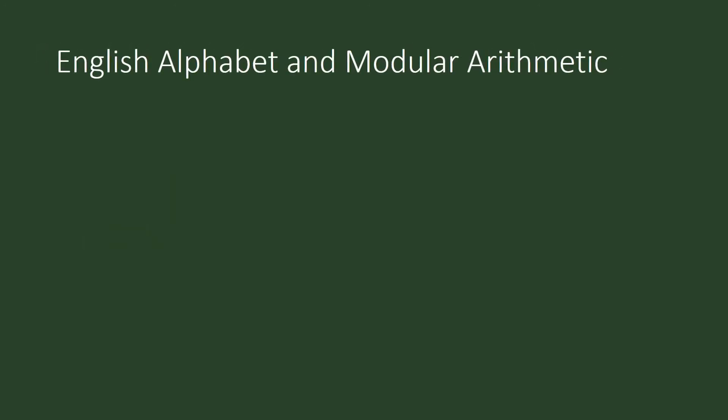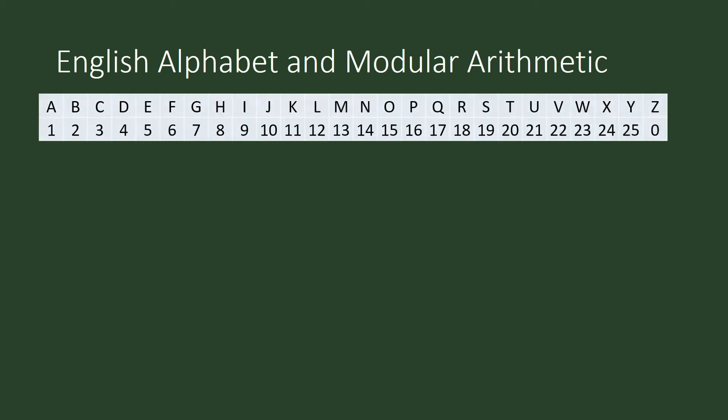We will begin with the English alphabet, and we will produce the numeric equivalent of each of these letters. So A is 1, B is 2, C is 3, and when we get to Z, look at this, Z is going to be 0. That is supposed to be number 26, but we will use congruence modulo 26, and 26 is congruent to 0 modulo 26.